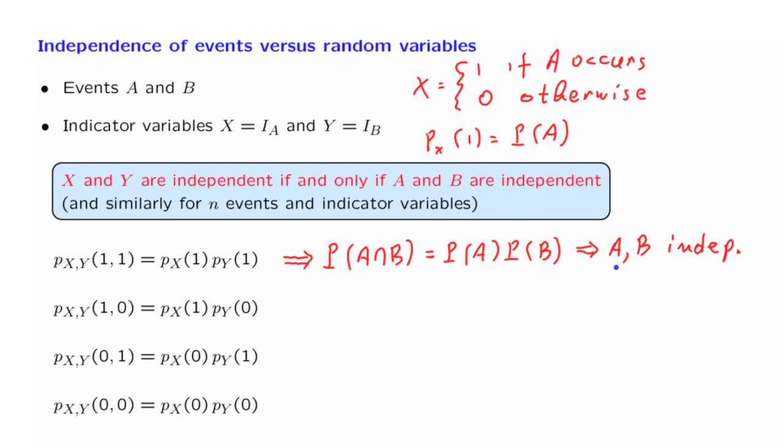So suppose that events A and B are independent. In that case, this relation is true. And as we just argued, this relation is the same as this relation, but just written in different notation. So we have shown that if A and B are independent, this relation will be true. But how about the remaining three relations? We have more work to do.